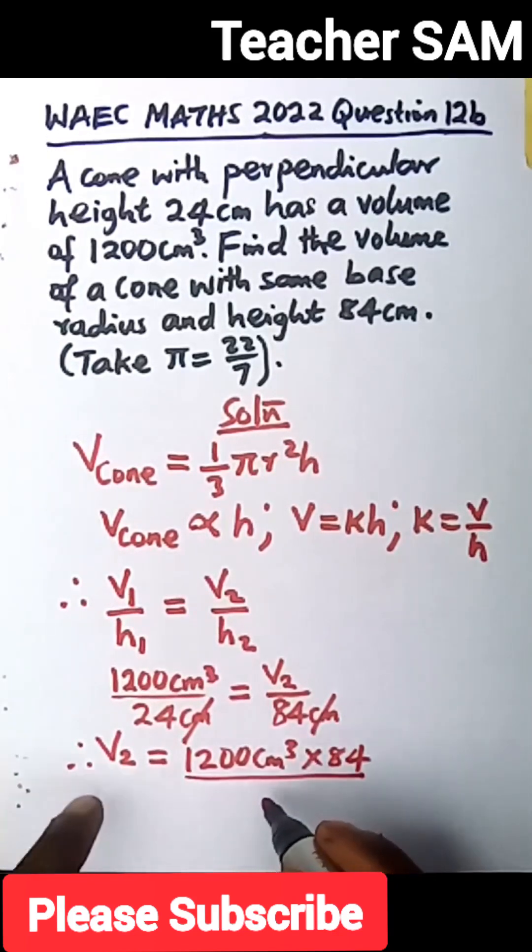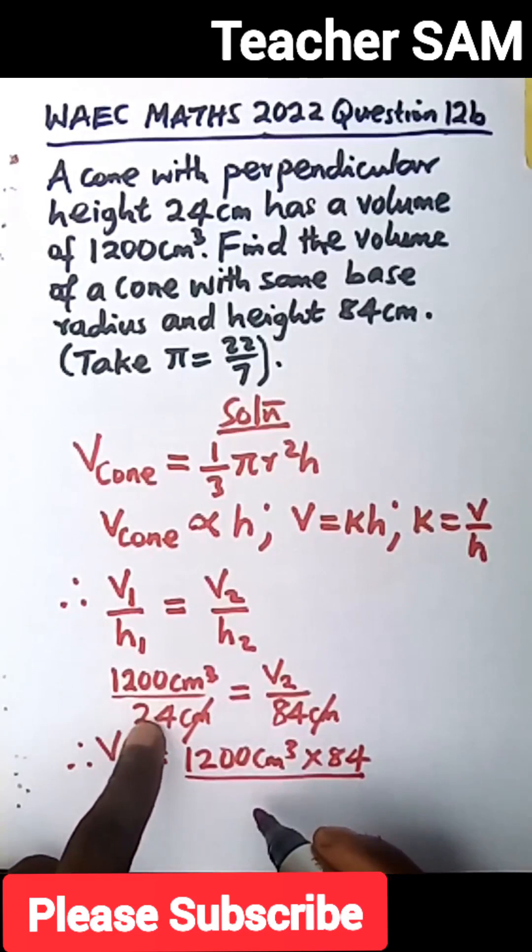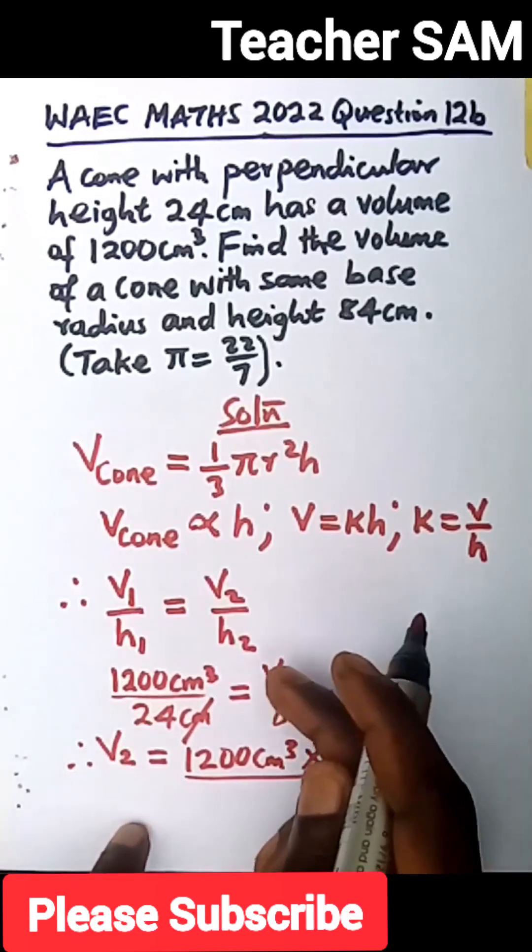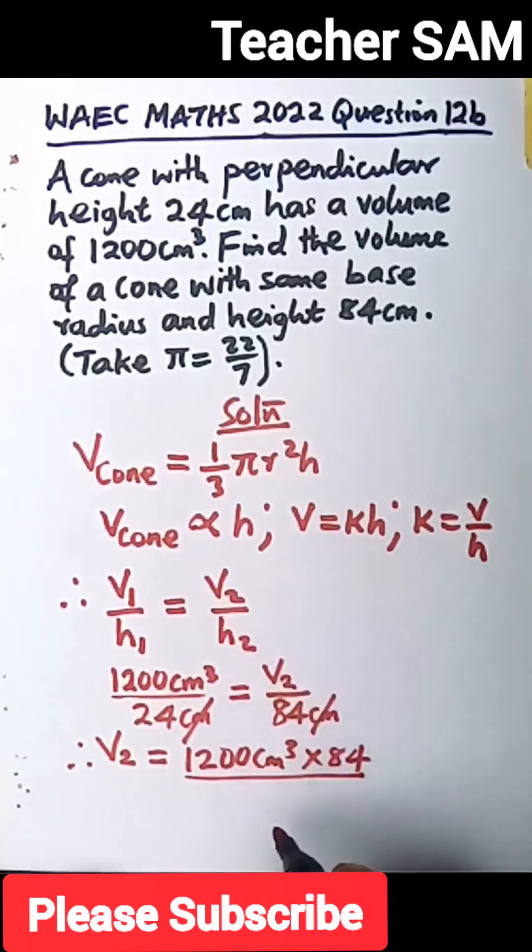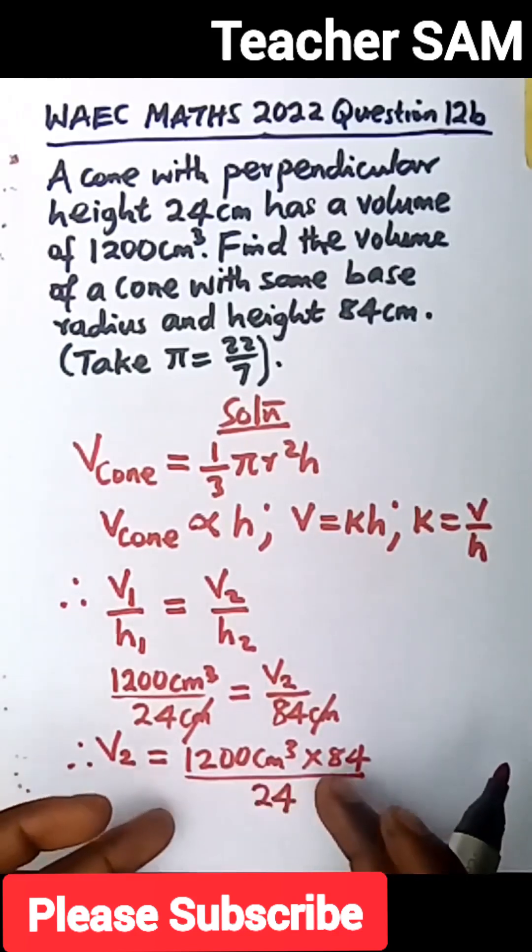That's all over 24. So by the time we make v2 the subject of formula, we have this.